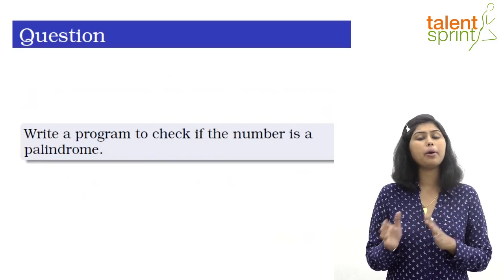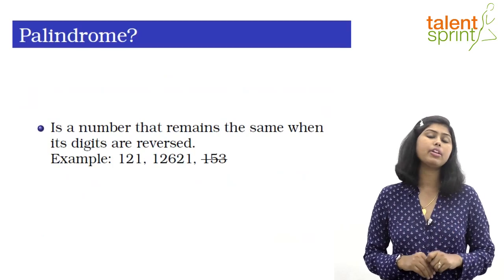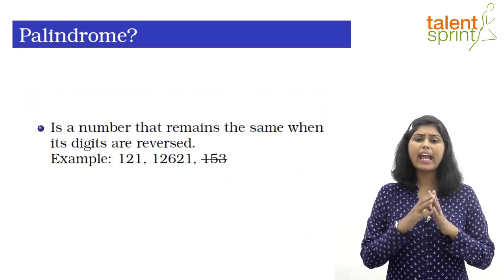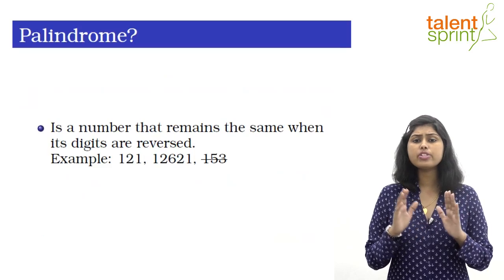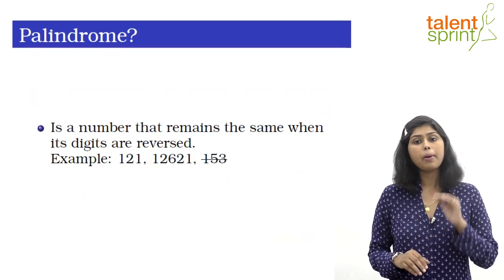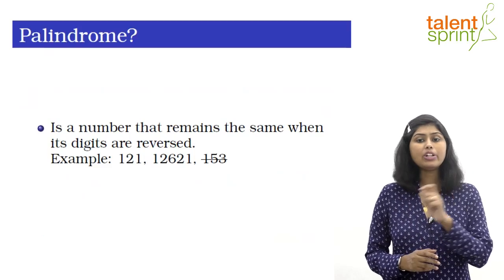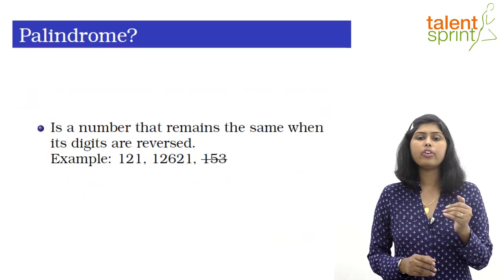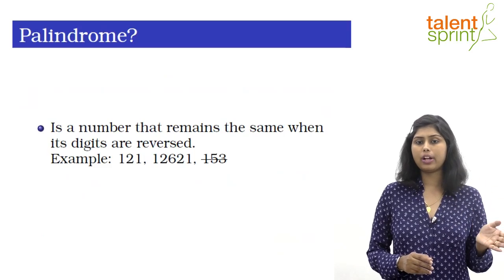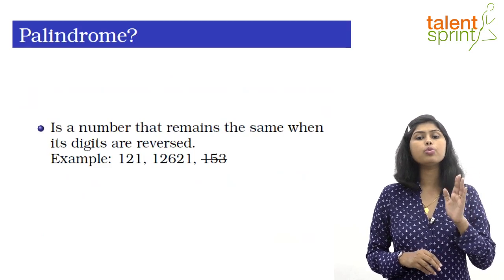Palindrome is a name given to a word, phrase, number, or any other sequence of characters which reads the same backwards or forwards. For example, 1-2-1: if I'm reading it backwards it is still going to be read as 1-2-1. Similarly, 1-2-6-2-1 read backwards also reads the same.